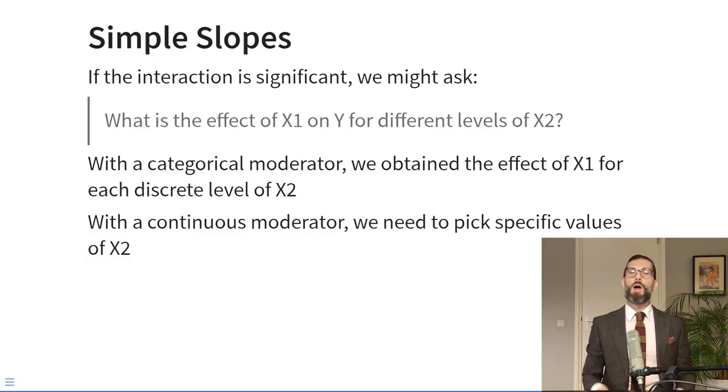After centering, the interpretation of coefficients becomes much more straightforward. The intercept A becomes the expected value of the outcome for people who score average on all predictors. The slope B1 becomes the effect of predictor 1 for people who score average on predictor 2. And the slope B2 becomes the effect of predictor 2 for people who score average on predictor 1.